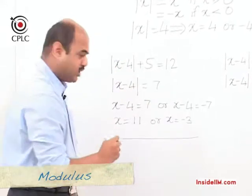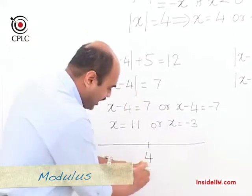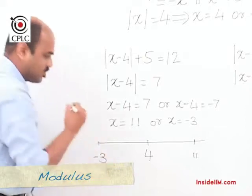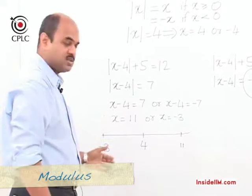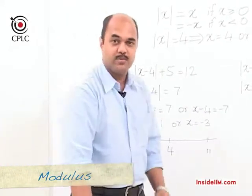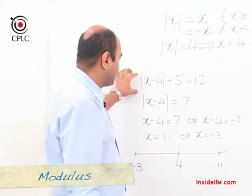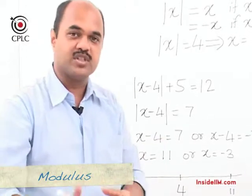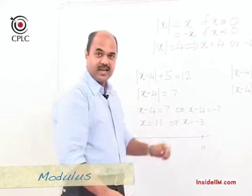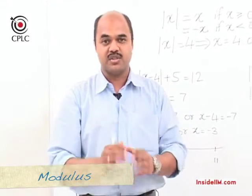This can be understood by looking at a number line. When we plot the point 4 and look at distance of x from 4 equal to 7: x is 7 more than 4, making it 11; or x is 7 less than 4, making it minus 3. So there are two possible solutions. Mod x means distance of x from the origin; mod of (x minus 4) means distance of x from 4; mod of (x plus 5) would mean distance of x from minus 5. We take the given distance on either side of the reference point.